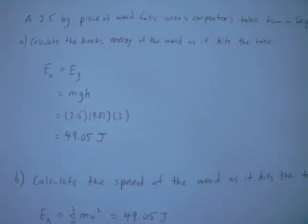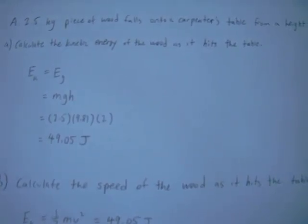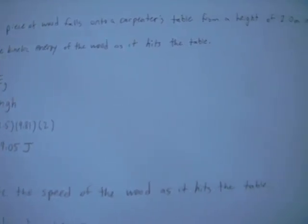Hello everyone, another question for us to do today. A 2.5 kg piece of wood falls onto a carpenter's table from a height of 2 meters above the table.